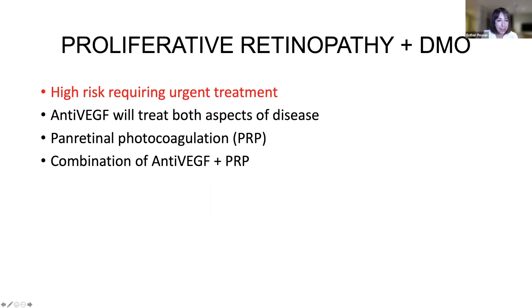It is not yet NICE-approved to use anti-VEGF to control proliferative retinopathy, but we can use Avastin, and there is trial data showing Eylea and Lucentis have the same effect. We use Avastin to rapidly get proliferative disease under control, then do laser treatment to permanently stabilize things — a combination of anti-VEGF and panretinal photocoagulation (PRP) to treat both the DMO and the proliferative disease.